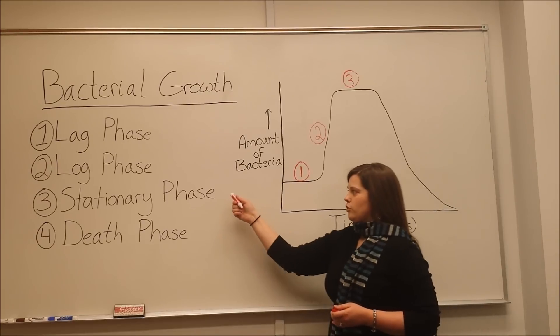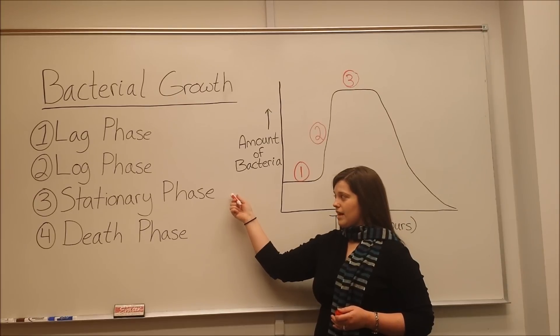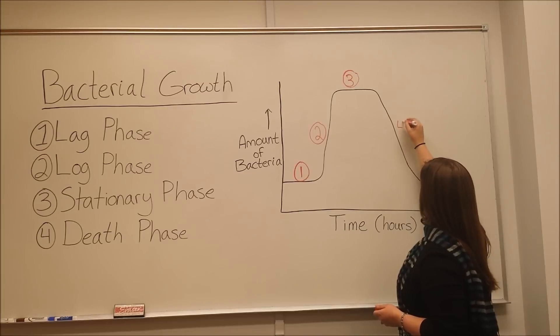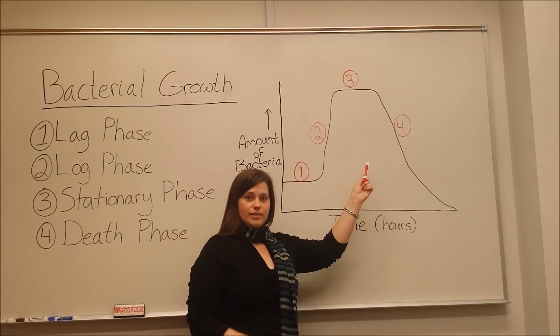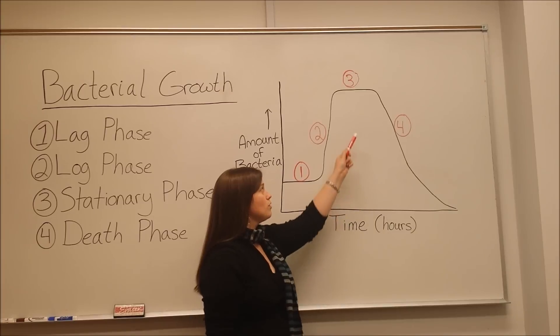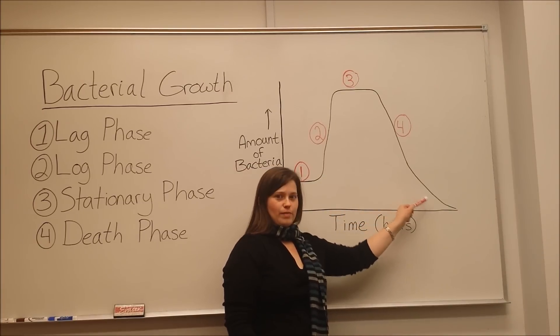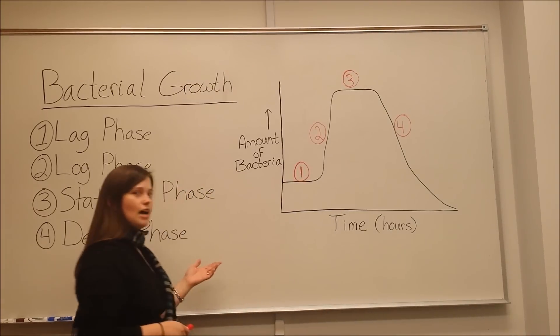And at this point, the nutrients are still being used up, the waste products are still building up, and this is what brings us to death phase, or logarithmic decline phase. This is when the rate of cell death exceeds the rate of cell division, so that you have an overall decrease in the amount of bacteria in the culture. And these are the phases of bacterial growth.